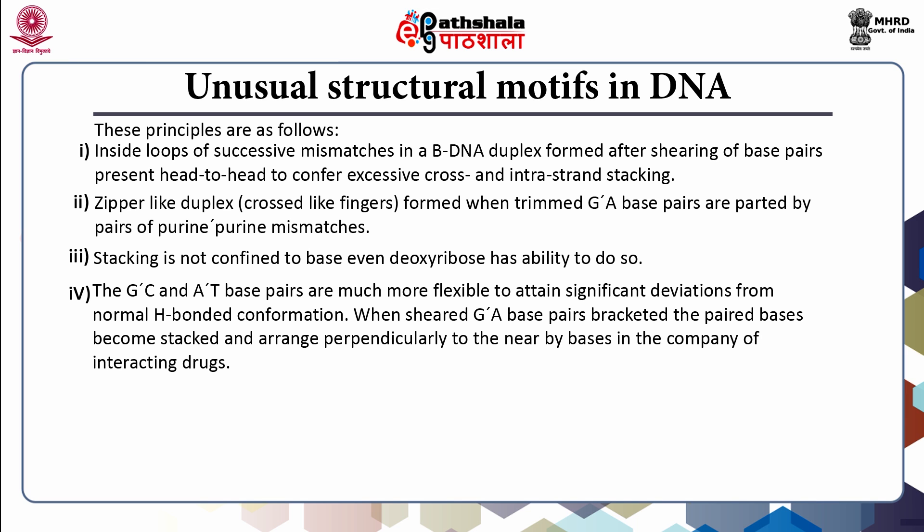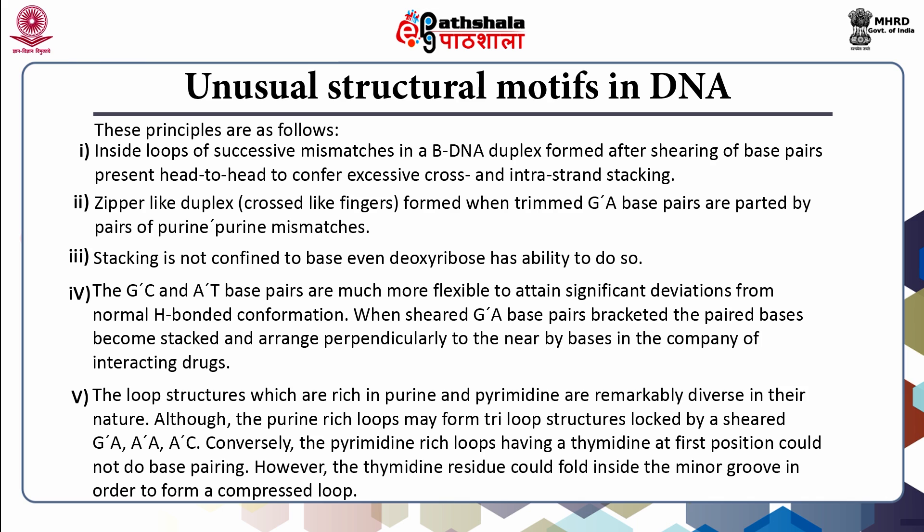When sheared GA base pairs bracket the paired bases, they become stacked and arranged perpendicularly to the nearby bases in the presence of interacting drugs. Loop structures rich in purines and pyrimidines are remarkably diverse in their nature. Purine-rich loops may form tri-loop structures locked by a sheared GA, AA, or AC base pair. Conversely, pyrimidine-rich loops having a thymidine at the first position cannot form base pairing. However, the thymidine residue could fold inside the minor groove to form a compressed loop.